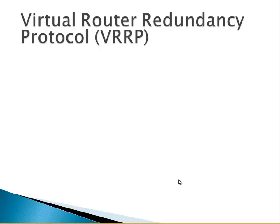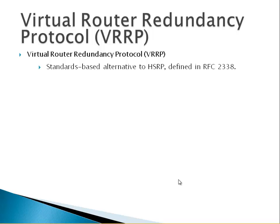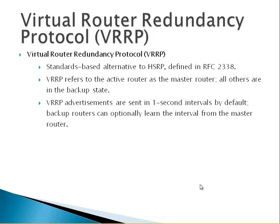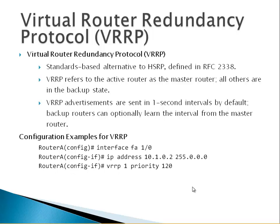Virtual Router Redundancy Protocol (VRRP) is a standards-based alternative to HSRP, defined in RFC 2338. VRRP refers to the active router as the master router; all others are in backup state. VRRP advertisements are sent in one-second intervals by default; backup routers can optionally learn the interval from the master router. For VRRP configuration, you go to the interface, give it an IP address, and then use commands similar to HSRP — but this time they start with 'vrrp' — setting the priority and the IP address.